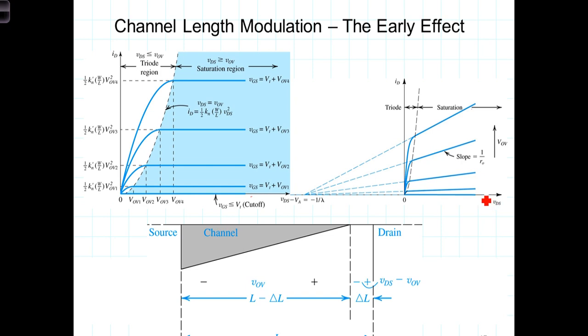This increase is accounted for by what is known as channel length modulation, or the early effect. As VDS is increased beyond pinch-off, the length of the channel begins to shorten, leaving a delta-L wide gap of depletion region between the end of the channel and the drain. As we can see in the diagram, the channel length then is shortened to L minus delta-L. The overdrive voltage is now, or still, dropped across the channel, but it's now dropped across this shortened channel.